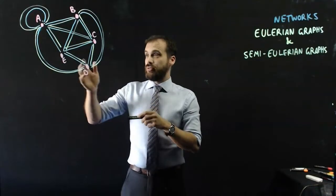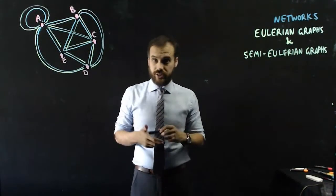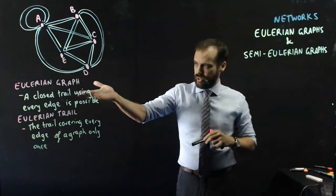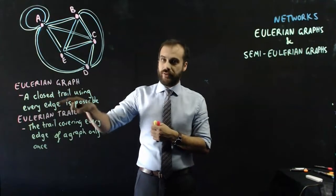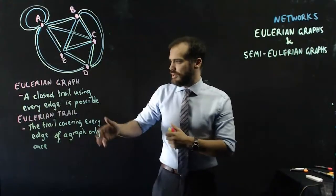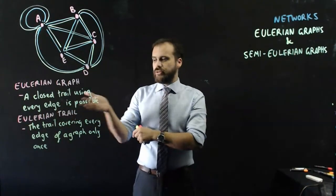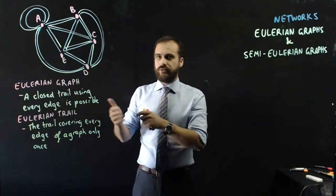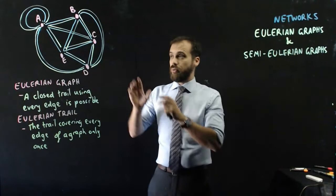What I just did is an Eulerian trail. So an Eulerian graph is a graph where a closed trail using every edge is possible. That's what I just created, closed trail. An Eulerian trail is the trail I just created, the trail covering every edge of a graph only once.